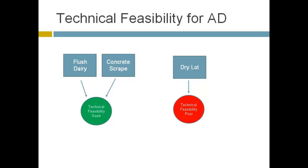For technical feasibility of anaerobic digestion — covering plug flow, complete mix, and covered lagoon reactors — flush dairies or concrete scrape dairies have pretty good technical feasibility for installing an anaerobic digester. That's why we see those facilities appearing on the East Coast and in the Midwest, where they have a lot of water and generally use flush or scrape manure. That management practice is less common in the arid West, where even in dairy facilities most animals are kept on dry lots. Technical feasibility is poor for dry lot collection with given technology.